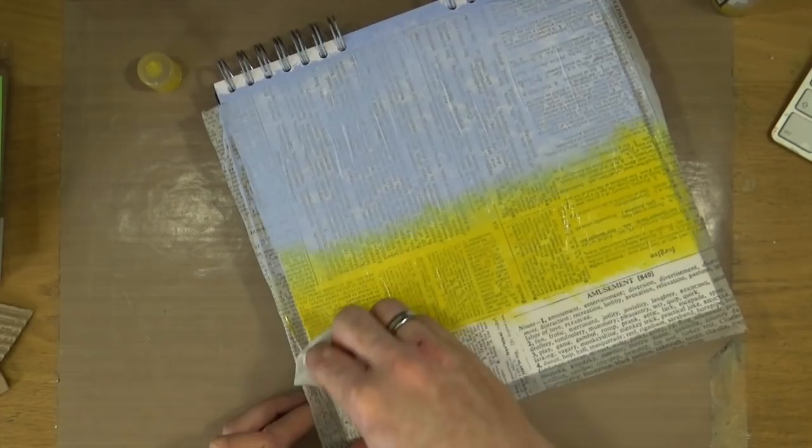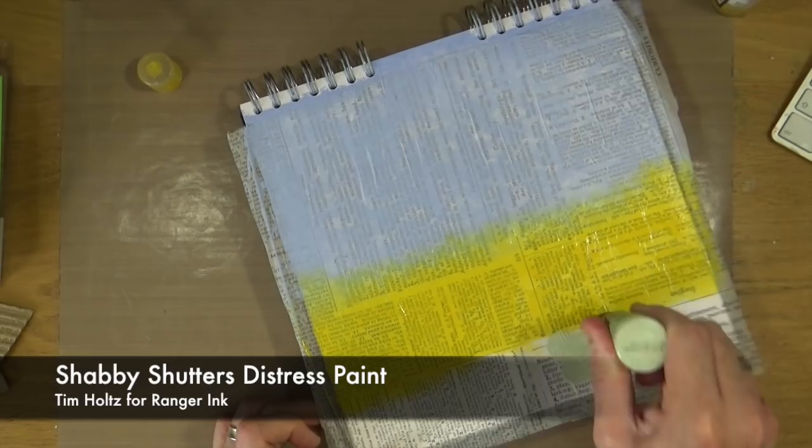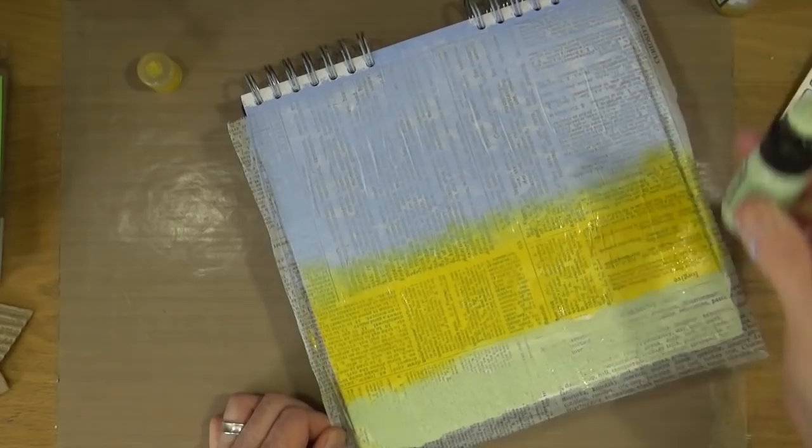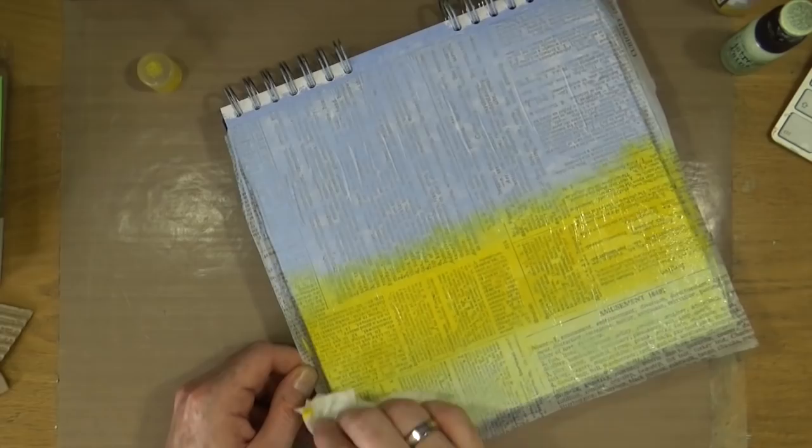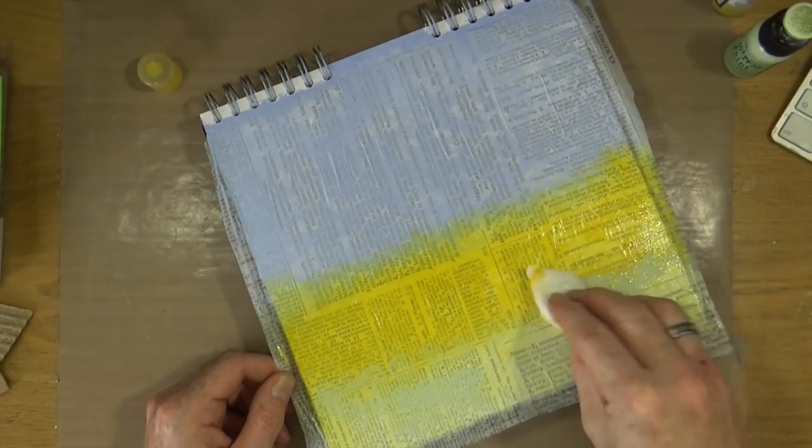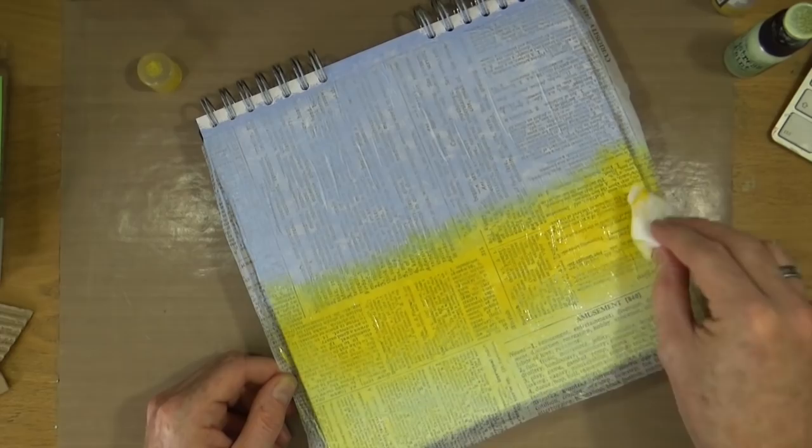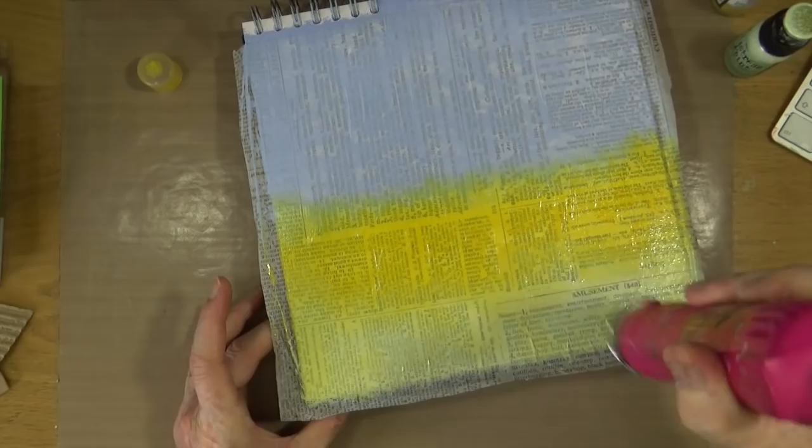My third color is the Shabby Shutters Green Distress paint, again from Ranger, Tim Holtz and Ranger. I'm just going to add that at the bottom of my page and repeat the same process with the baby wipe, just using dabbing motions to make sure that I've got no kind of sweeping brush marks. You will see me add a little bit more paint on as and where it's needed. When I'm happy with the color as is, I'm just going to grab the heat gun and set it in place before moving on to the next layer.